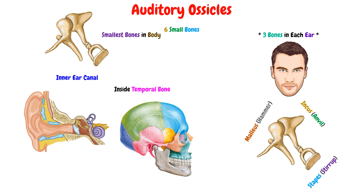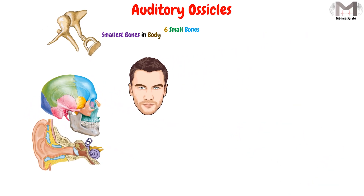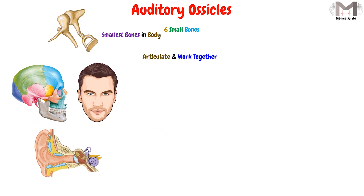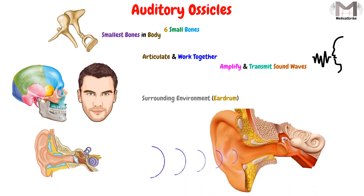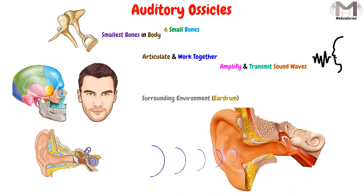These bones articulate and work together in order to amplify and transmit the sound waves from the surrounding environment, or from the eardrum to the structures of the inner ear. So this is regarding the auditory ossicles and their function.